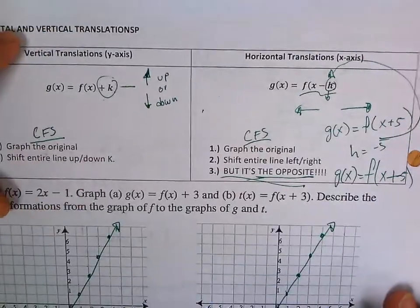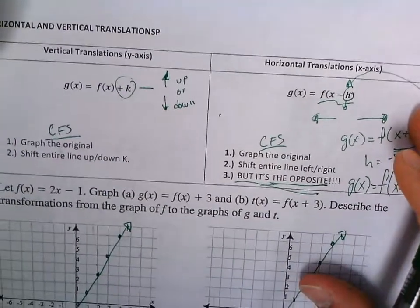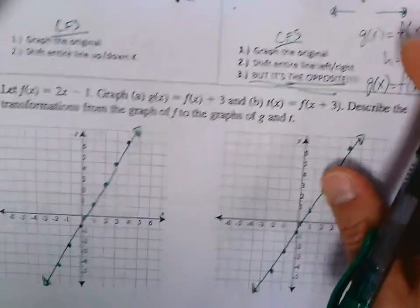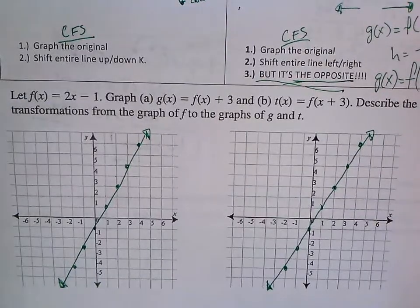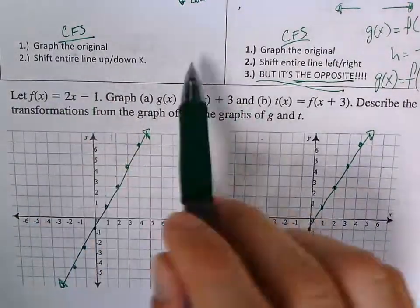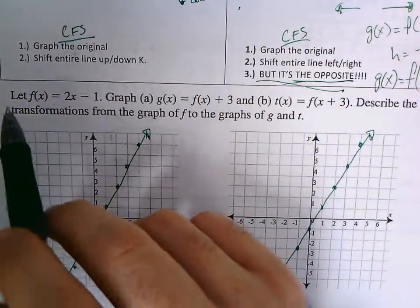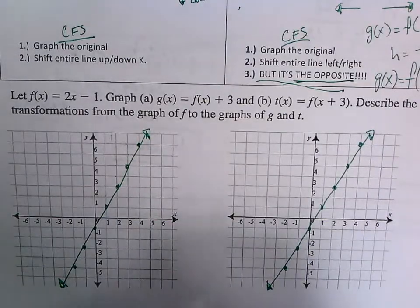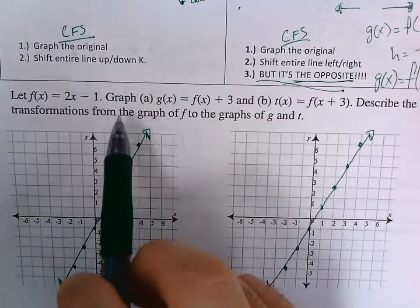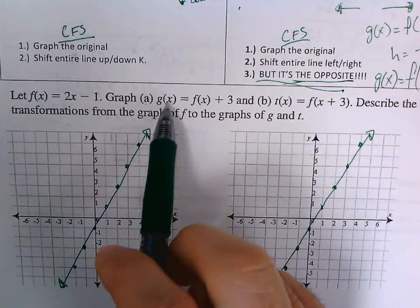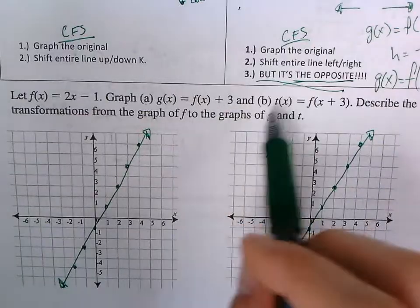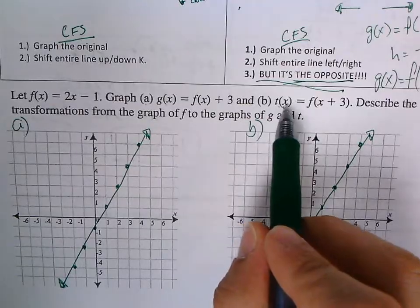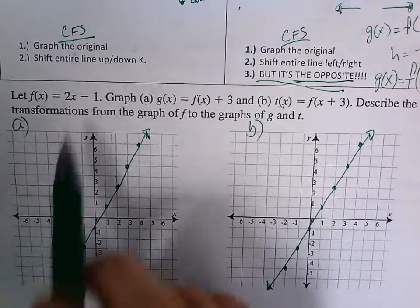Let's dive into the examples I've prepared. I already did the first step, which is graph the original. The problem says let f of x equal 2x minus 1 — that's already this line I graphed. Then part A says g of x equals f of x plus 3, and part B says t of x equals f of x plus 3. It also says describe the transformation from the graphs.